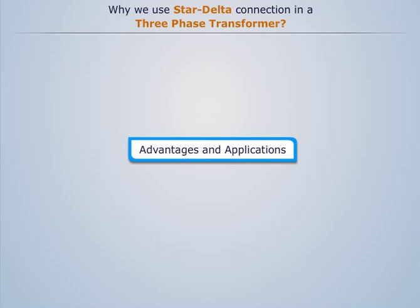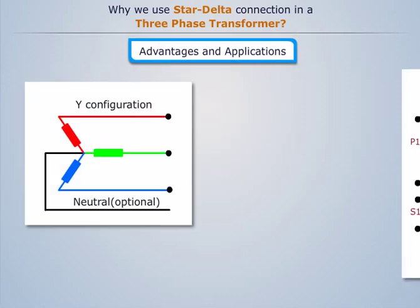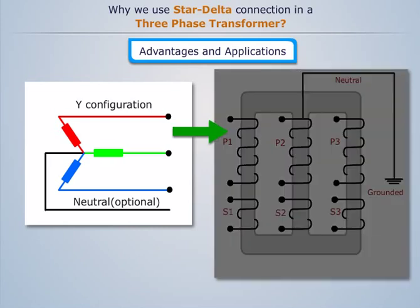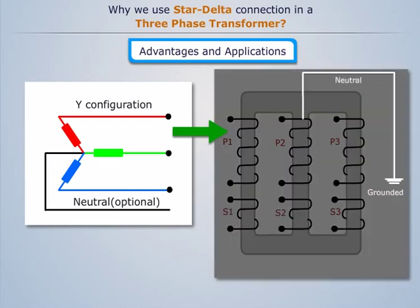The primary side is star connected, hence fewer number of turns are required. This makes the connection economical for large high voltage step-down power transformers. The neutral available on the primary can be earthed to avoid distortion.